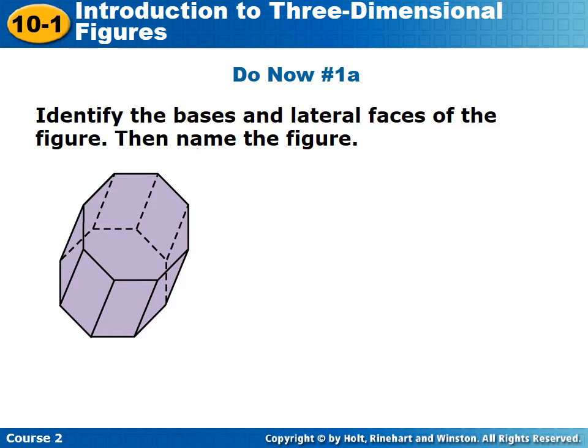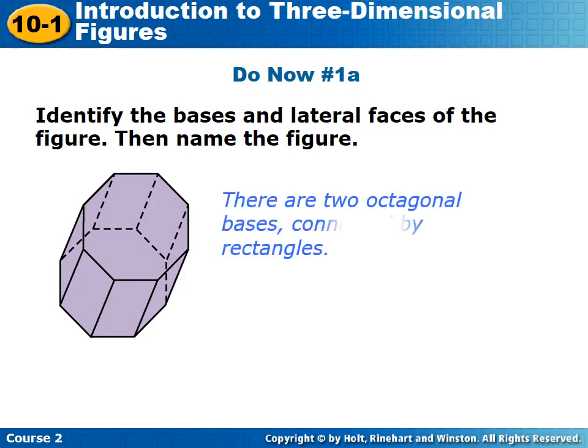So now we've got a series of do-now questions where you're going to be identifying the three-dimensional figures that you see. Make sure to pause and try each one before seeing the answer on each slide. If you look at this figure, you can see that it has two octagonal bases, and those are connected by rectangles. So that makes this an octagonal prism.